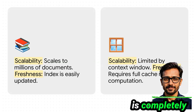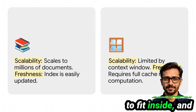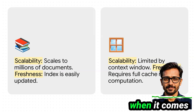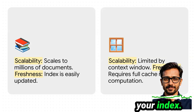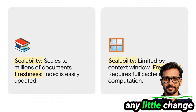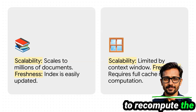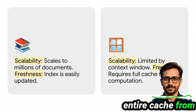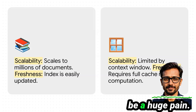CAG, on the other hand, is completely limited by the LLM's context window size — everything has to fit inside. And when it comes to keeping your data fresh, RAG is super nimble; you just update your index. But with CAG, any little change to your source documents means you have to recompute the entire cache from scratch, which can be a huge pain.